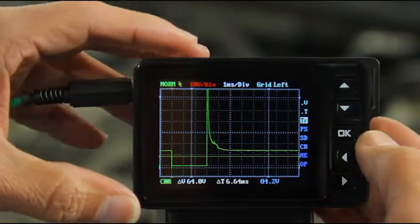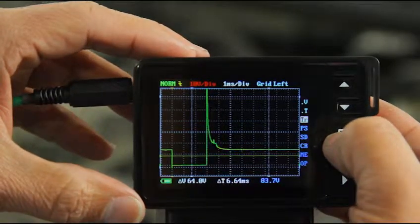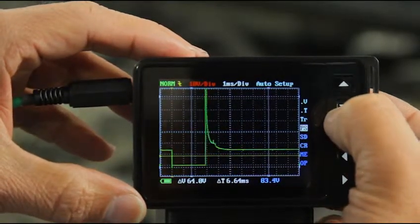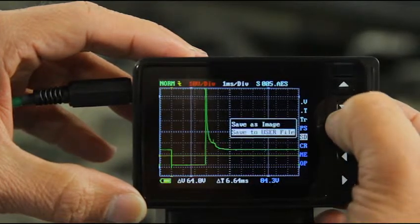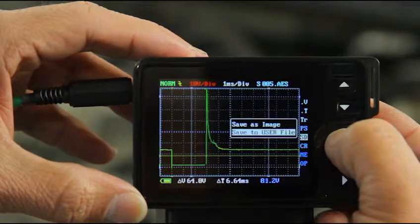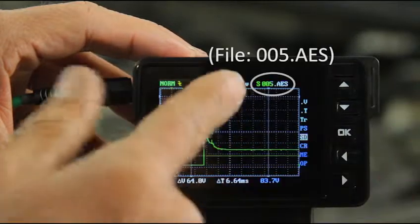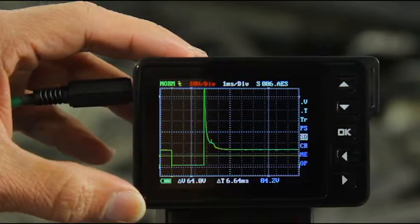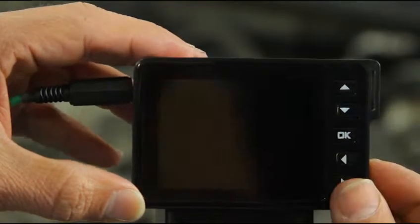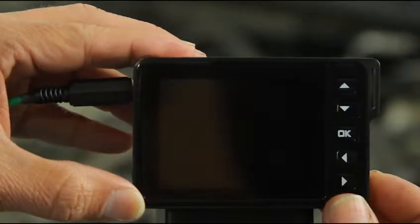Next step is I'm going to save this preset that I just created by going to SD. I'm going to select save to user file, and I'm going to hold down the OK key. Up on the top right, you can see that it's going to file 004.